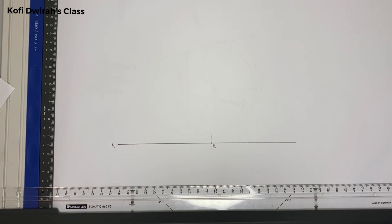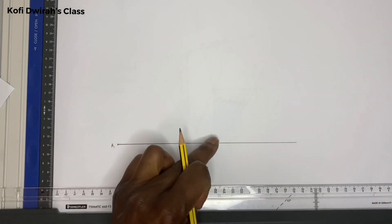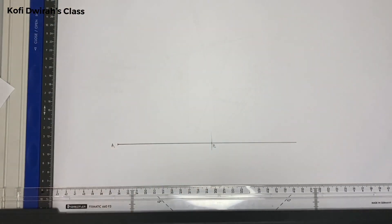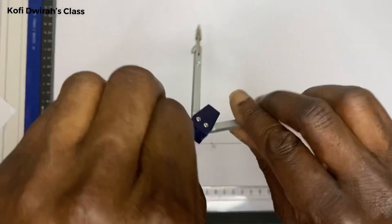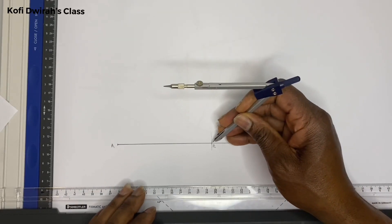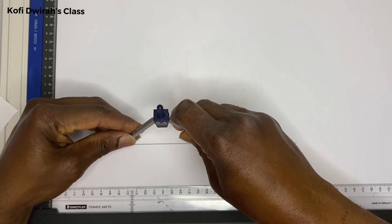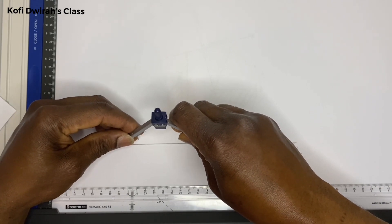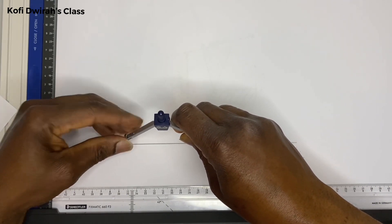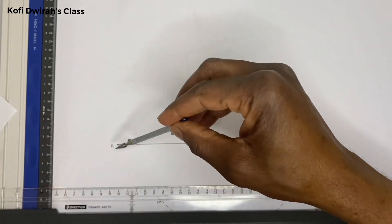We have to construct a 60 degrees angle. The angle is ABC, meaning it goes A, B, C — so the angle will be at point B. With your compass, put your compass at point B, then open to point A and draw an arc.